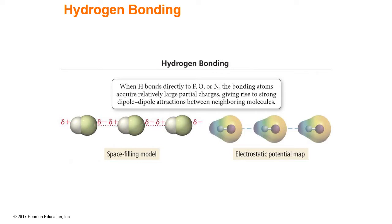Hydrogen bonds are stronger than dipole-dipole or dispersion forces, and substances that can hydrogen bond will have higher boiling points and melting points than similar substances. But they're not nearly as strong as a chemical bond — they're about 2% to 5% of a covalent bond. Even though it's called a hydrogen bond, it is not a physical sharing of electrons. It is a stronger dipole-dipole force.